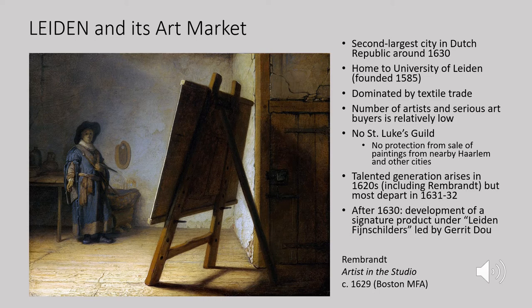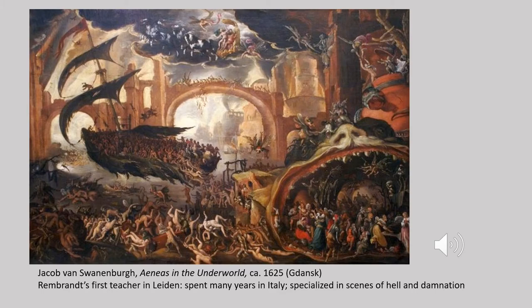Equally important, there was no St. Luke's Guild in Leiden to support local artists, so many works of art were brought in from elsewhere, particularly from Haarlem nearby. These factors may have been among the reasons Rembrandt and several talented contemporaries decided to leave in the early 1630s. One of the more bizarre products of the Leiden art market was the work of Jacob van Swanenburgh, Rembrandt's first teacher, who spent most of his career painting bizarre scenes of hell and damnation inspired by Hieronymus Bosch.